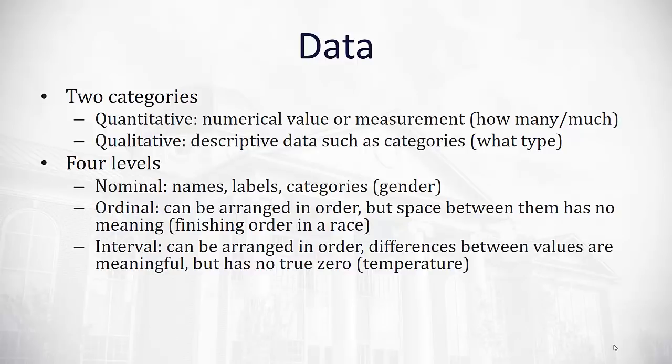Interval data then is when we are not just in order, but the space has meaning. However, there's no true absolute zero in interval data. An example of this is temperature. Temperature can be put in order. The space between two temperatures has meaning. The space between 95 and 96 is the same as the space between 45 and 46. One degree always has the same space. However, there's no true zero. There's no point where we say there is no temperature because it's zero. We do have a zero with temperature, but it's kind of been arbitrarily just placed on the scale. We could have put it anywhere and the temperature would still work the same. So temperature has no true zero.